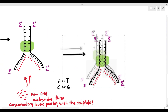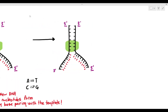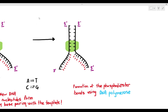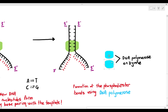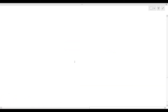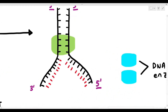Here is where it becomes a little bit confusing. In the new strand, the phosphodiester bonds — the red-colored ones — have to be formed. To form the phosphodiester bonds, we need an enzyme called DNA polymerase. The function of DNA polymerase is to form the new strands by linking together the red-colored DNA nucleotides. New nucleotides are added in a 5' to 3' direction.